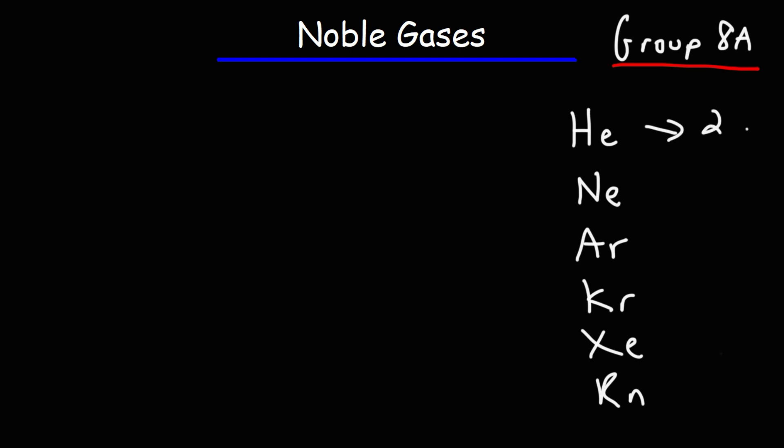Helium has two valence electrons. Neon has eight valence electrons. Argon, krypton, the rest, they also have eight valence electrons as well. But their outermost energy level is filled with electrons and that explains the unusual stability that this group of elements have.